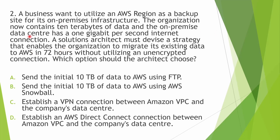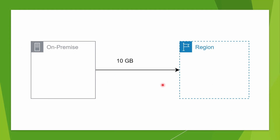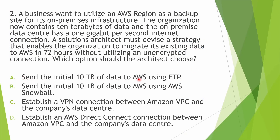The key keywords here are 72 hours. They want to move from on-premise to their AWS region — you have an on-premise data center and need to move 10 terabytes of data in 72 hours. The first option is to send the initial 10 TB using FTP, but FTP is an unencrypted connection, and the requirement says without an unencrypted connection — so that is ruled out. Sending the data using AWS Snowball could work, but requesting, shipping, loading, and returning Snowball cannot be done in 72 hours.